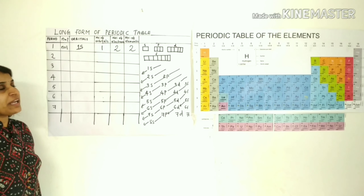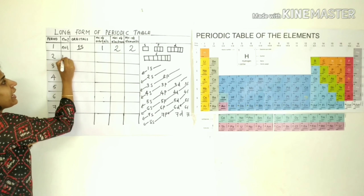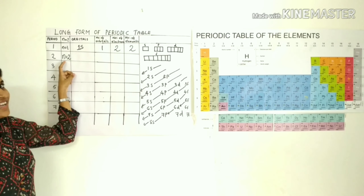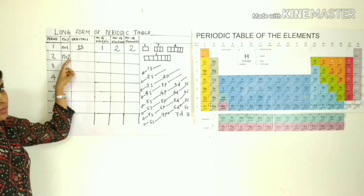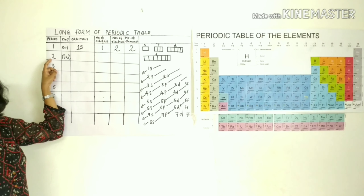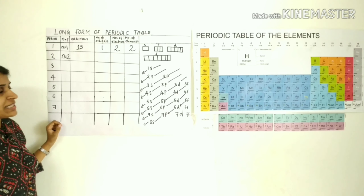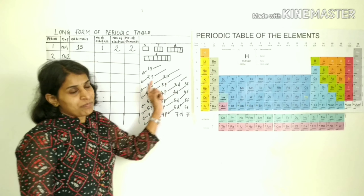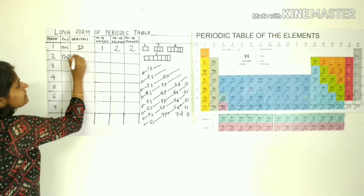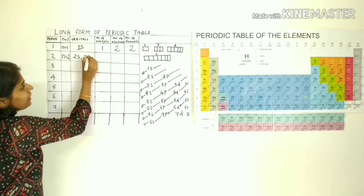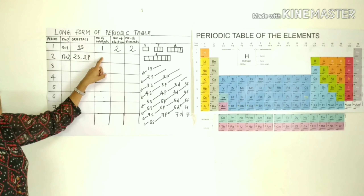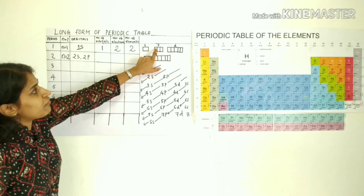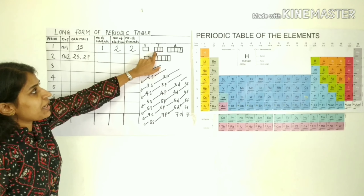The second period has n equal to 2, corresponding to the filling of the second energy level. The orbitals available are 2s and 2p. The s subshell has 1 orbital, and the p subshell has 3 orbitals — px, py, pz.